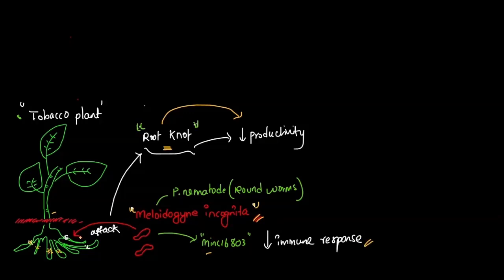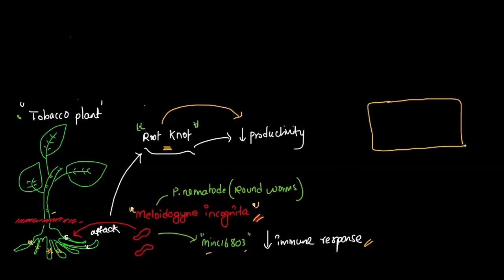One such example is the gene Mink 16803. This is a gene which suppresses the immune response of this particular plant, so that Meloidogyne incognita could survive inside this host plant. Our first step is to identify this gene, and our second step is to introduce this gene into a host — that is, our plant — because we want to make a Meloidogyne incognita resistant tobacco plant.